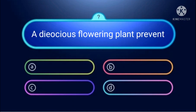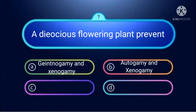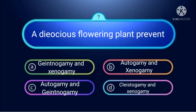Next question: A dioecious flowering plant prevents which combination? Options: geitonogamy and xenogamy; autogamy and xenogamy; autogamy and geitonogamy; cleistogamy and xenogamy. In a dioecious plant, male and female flowers are present on different plants. Autogamy means transfer of pollen grain from anther to stigma in the same flower — this is impossible in dioecious plants.